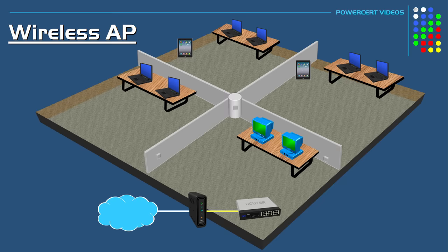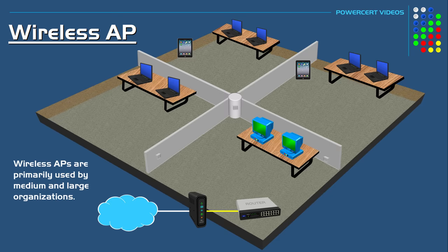Wireless access points are primarily used by medium to large organizations, and typically an organization will have multiple access points to make sure it covers the entire building.